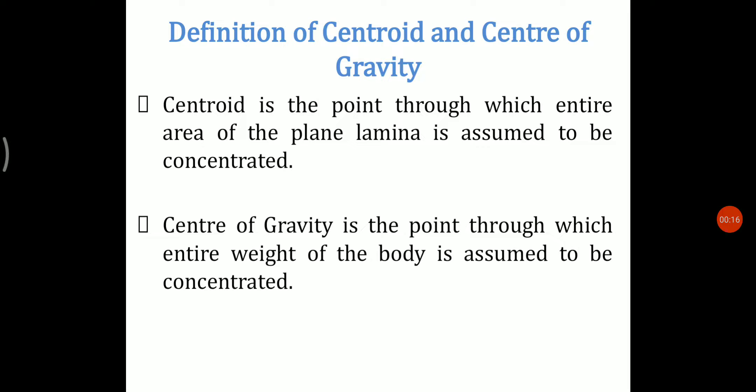Let us study the definition of centroid and center of gravity first. Centroid is the point through which the entire area of the plane lamina is assumed to be concentrated, whereas center of gravity is the point through which the entire weight of the body is assumed to be concentrated. Centroid refers to plane figures only — that is rectangle, triangle, circle, etc. — while center of gravity refers to solids. Centroid and center of gravity are always the same for plane lamina.